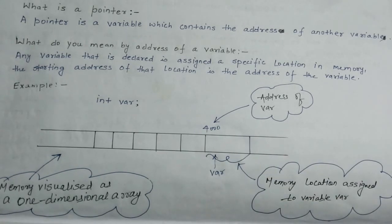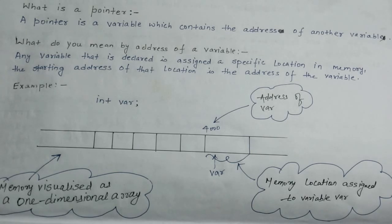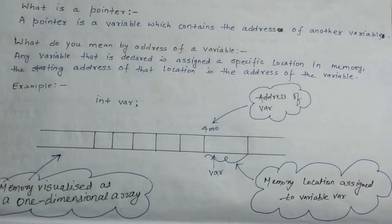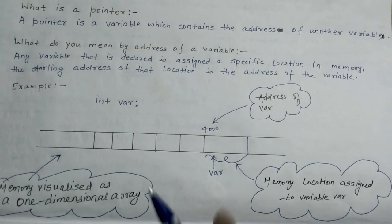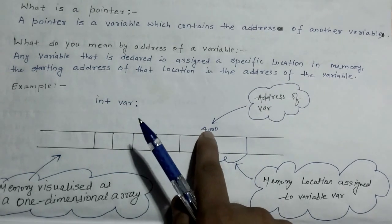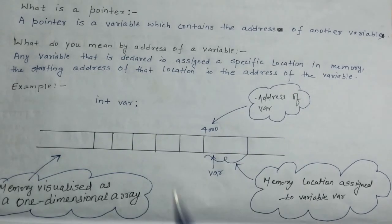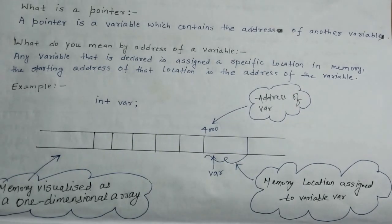In the same way, you have an address — you give your address to someone and using that address, the other person searches and finds you. Similarly, the machine has an address associated with each memory location. So the starting address of this memory location is known as the address of that variable.